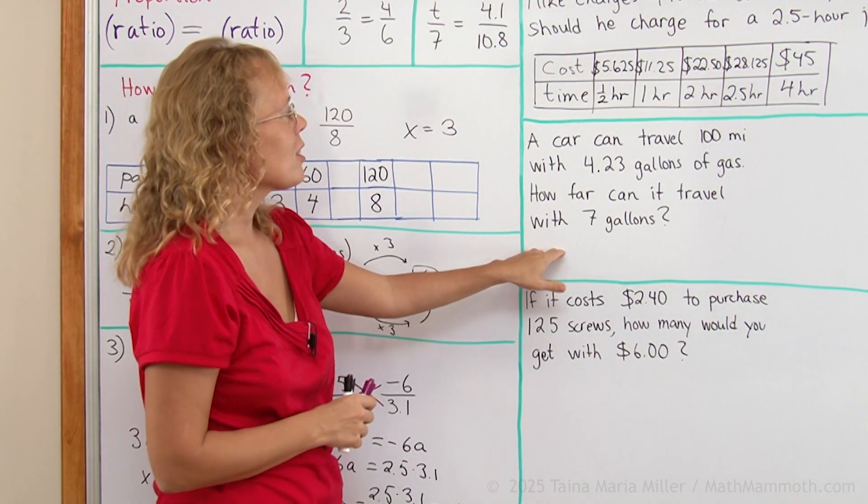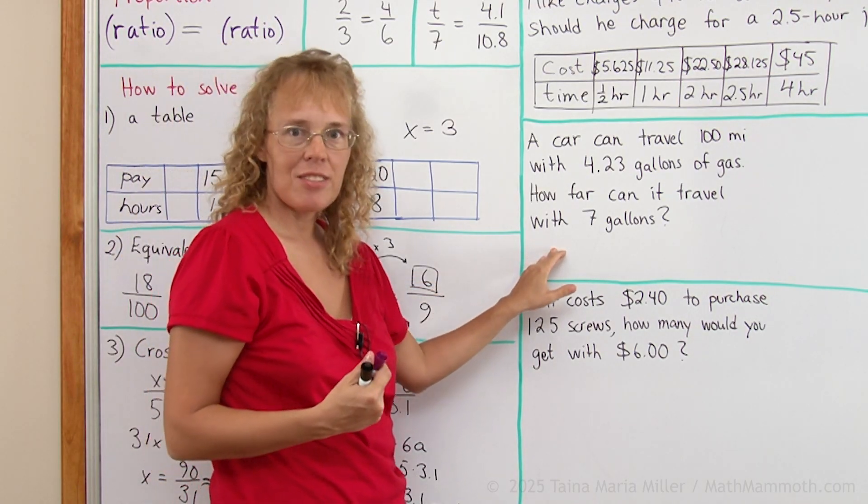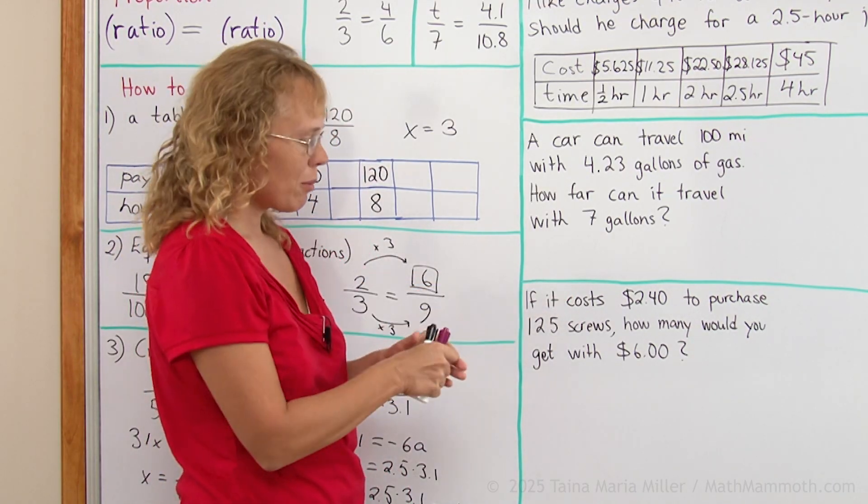A car can travel 100 miles with 4.23 gallons of gas, so how far can it travel with 7 gallons?